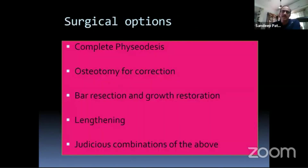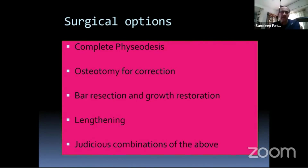The surgical options available are: you can complete the growth arrest and deal only with linear shortening; you can do an osteotomy with correction of deformity and bar resection; you can do bar resection and attempt growth modulation; you can just lengthen; or you can use combinations of all of the above.